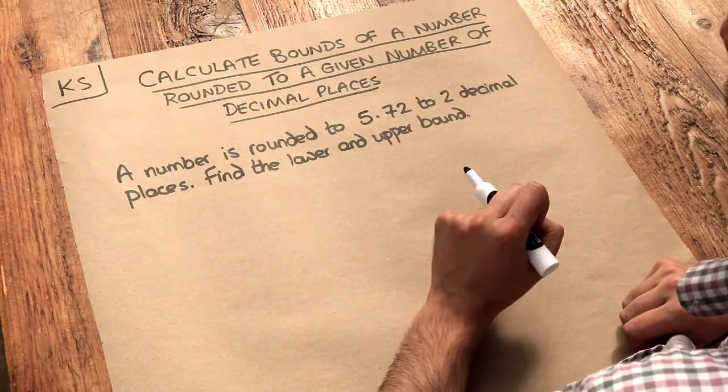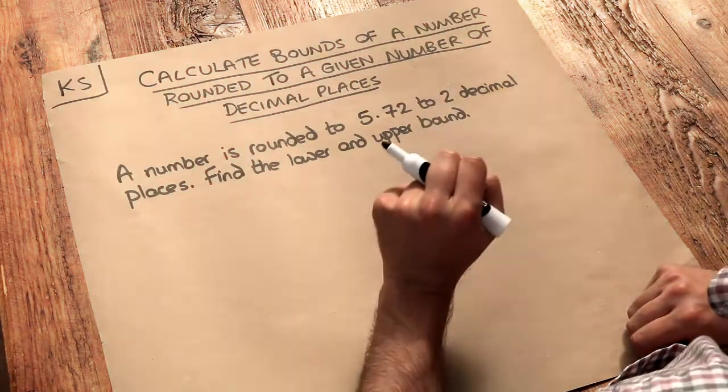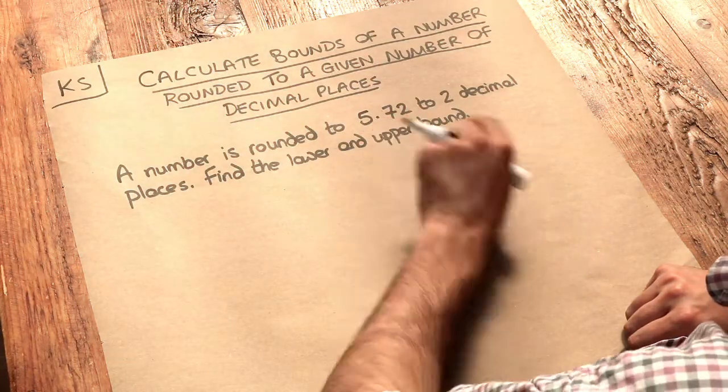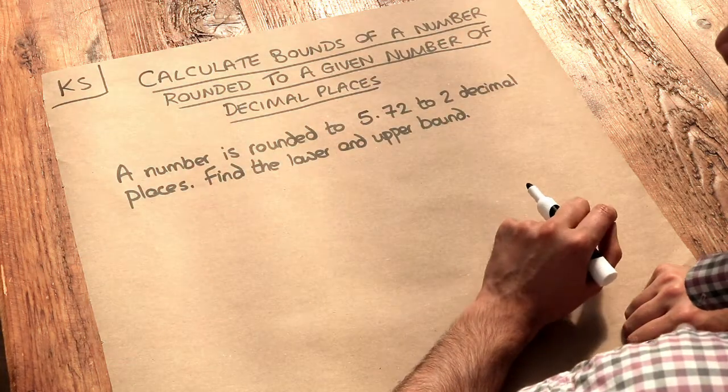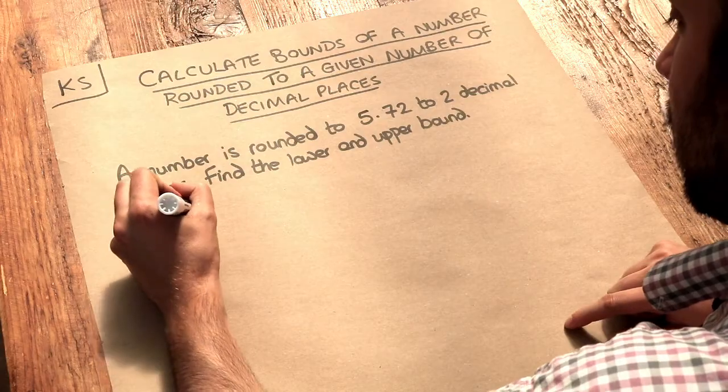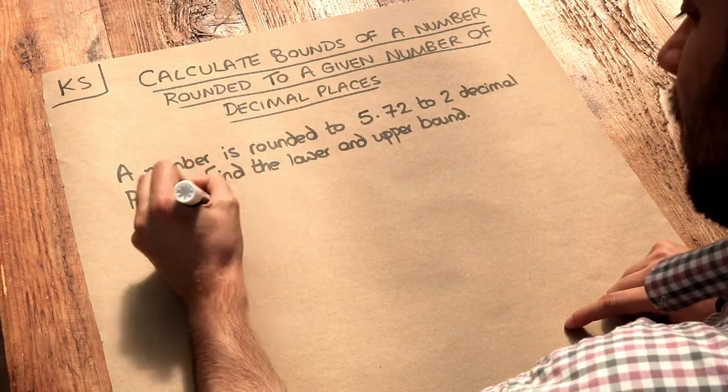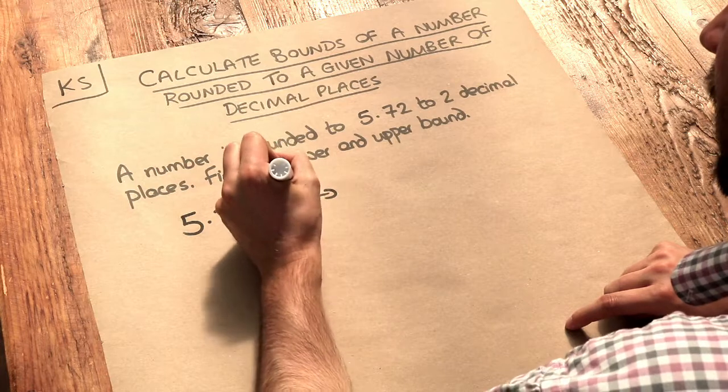And what that means is we want to find, for example, the lowest number such that when we round it to two decimal places we get 5.72. So for example we could have had, I don't know, 5.716 and if you were to round that